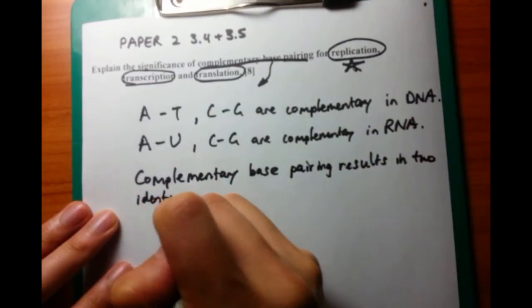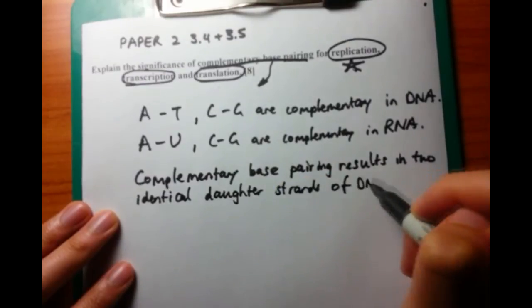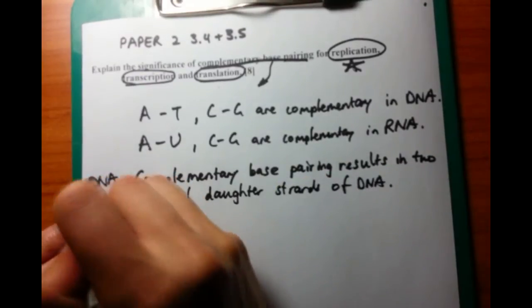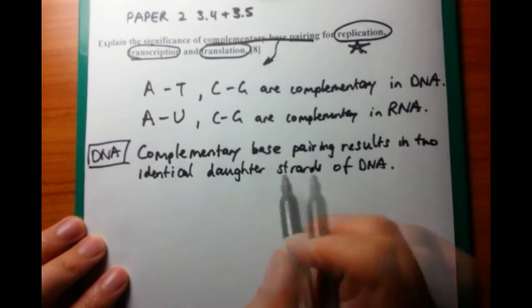So now I'm going to be talking about DNA, and I want to talk about how complementary base pairing results in two identical daughter strands of DNA when this occurs in DNA replication.